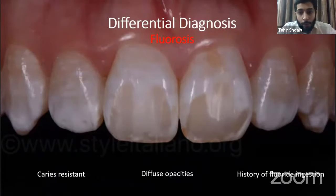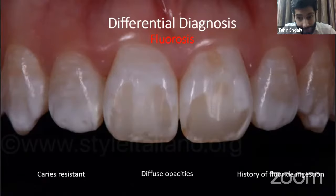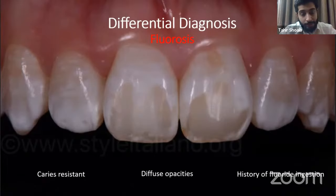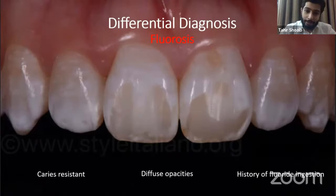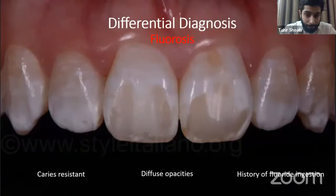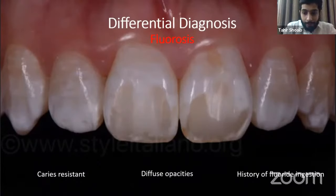What are the other conditions that we need to differentiate MIH from? Let's talk about fluorosis. Fluorosis, particularly mild fluorosis, can mimic MIH, and it has diffuse opacities affecting all the teeth. What's different in MIH is that we see well-demarcated opacities that are limited to molars and the incisors. Also, in fluorosis, the teeth are very caries resistant due to higher fluoride content. However, in MIH, they are more prone to caries. What we find in fluorosis is these children have a very strong history of fluoride ingestion — either from well water during the initial stages of their life or any history of ingestion of toothpaste. This is quite distinct between the two conditions.